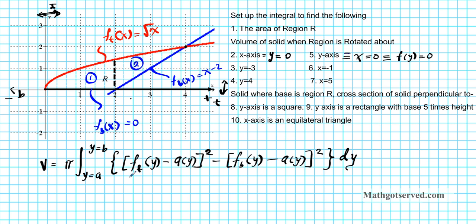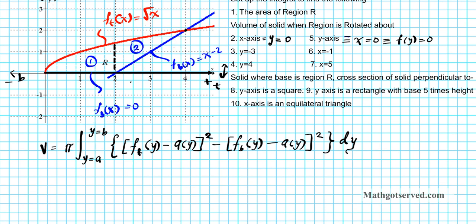One thing to note: all the variables are y's. When you're rotating in the direction of the y-axis, all your variables have to be y's. This formula is applicable if the function on the top is greater than the function on the bottom, and both are greater than or equal to the axis of rotation as a function of y.